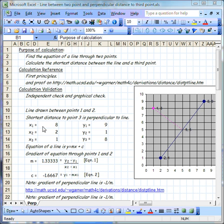So the first thing that we do is we work out the equation of this line here. The line is drawn between two points, points 1 and 2, so point 1 is shown there, and point 2 is shown here.